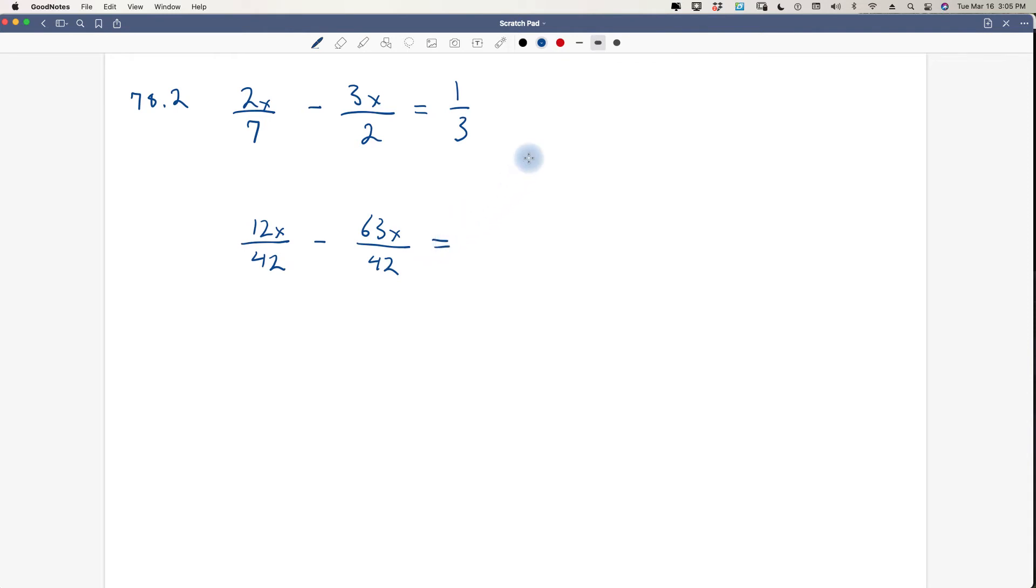And over here we have one third, and 42 divided by 3 is going to be 14. The reason I know that is because 7 times 2 are the other two factors. That's all I'm doing, multiplying the other two factors. So when I multiply this by 14, 14 times 1 is 14, and 14 times 3 is 42.